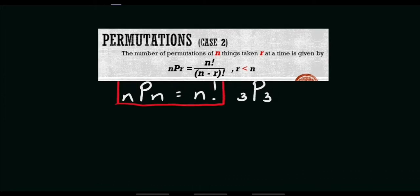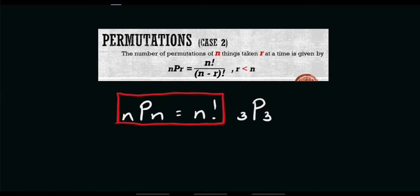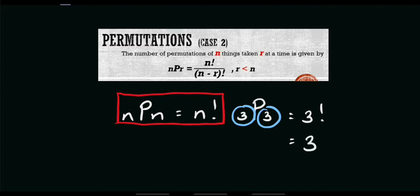Quick review. According to our previous discussion, if we encounter a problem wherein n and r have the same value, we use the concept of factorial. For example, the permutation of 3 taken 3 at a time automatically equals 3 factorial, which is 3 times 2 times 1, or simply 6.